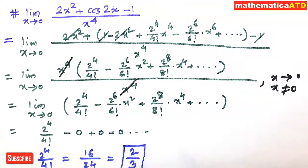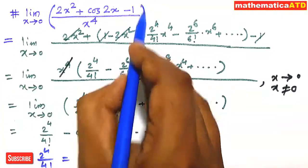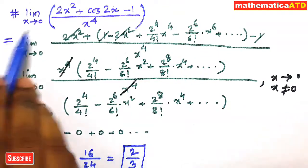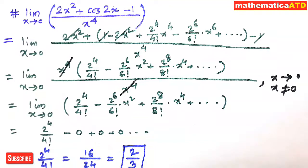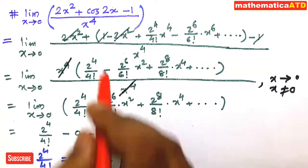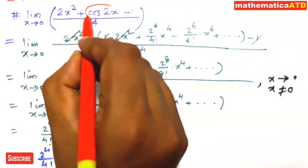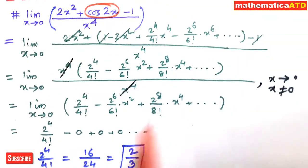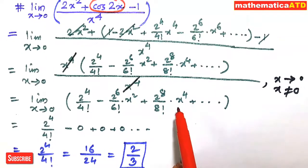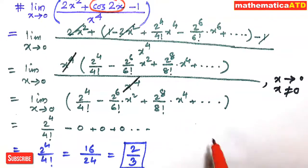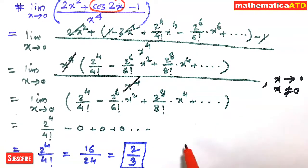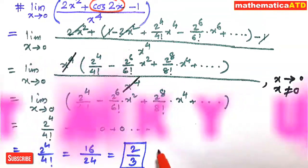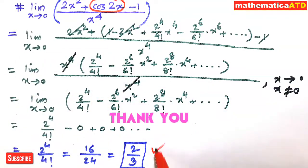So the limiting value of the given function 2x² + cos(2x) − 1 divided by x⁴ is 2/3 when x tends to 0. Here we have used the Taylor series for the trigonometric function cos(2x). In limits, we can use Taylor series and Maclaurin series. Thank you, have a nice day.